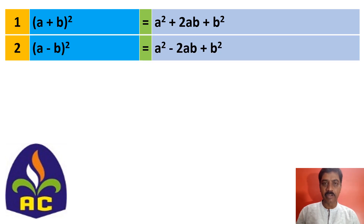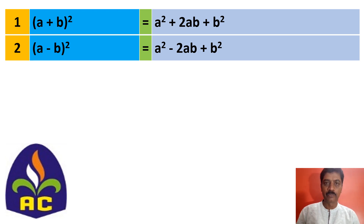This is your second identity: a minus b, the whole square, you write it as a squared minus 2ab plus b squared.